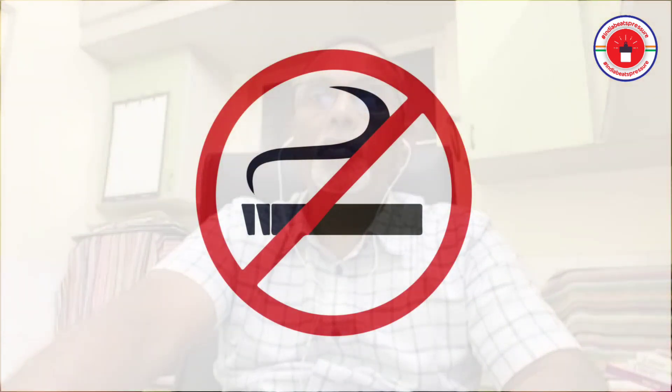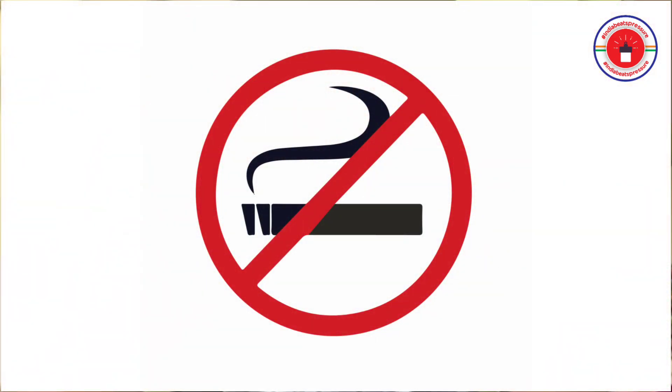Quit smoking. Tobacco smoke always stiffens the arteries, so they never fully relax during the diastolic period. Quitting smoking helps reduce blood pressure.